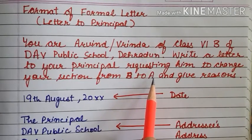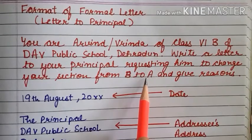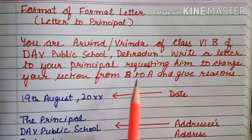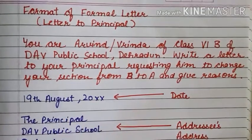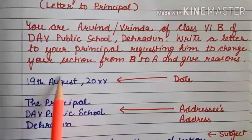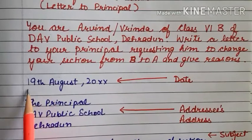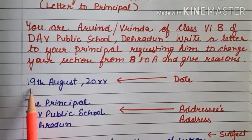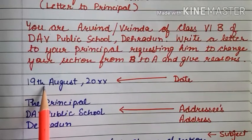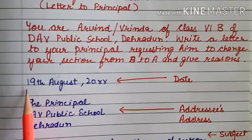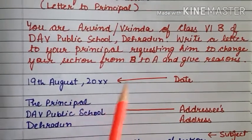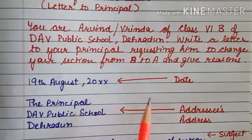You have to think of a good reason to support your request. Now let's see the format for formal letters. First, we write the date on the left side. The pattern you will follow is: write the number with 'th' — for example, 19th August — followed by a comma and then the year. That is the date.